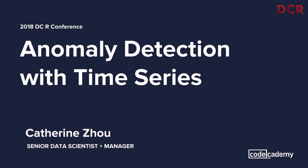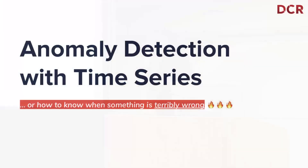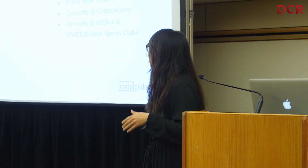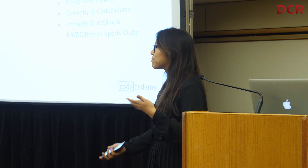I really like bikes — that was actually for a DC bike conference about five years ago. But now I am a senior data scientist and manager at Codecademy, and today I'll be talking about anomaly detection with time series, or my alternative title: how to know when a thing is terribly wrong. A little bit about me: I'm a proud New Yorker, I've been a member of the New York art community since about 2015 or 2016, but I'm born and raised in Brooklyn. I'm currently at Codecademy, but before this I was at JetBlue and New York or DC Sports Clubs.